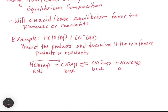Now for the second part of the question — determining if the reaction favors products or reactants. The way I like to think about this is as a competition. We have HClO reacting with CN⁻ in the forward direction and in the reverse direction — almost like a tug of war, where we have to see which side pushes harder. The stronger acid is going to push harder, meaning the reaction will favor going in the direction of the stronger acid.